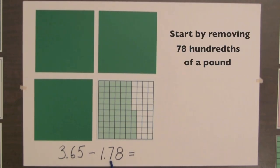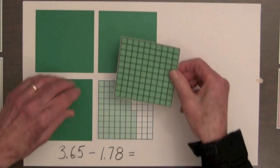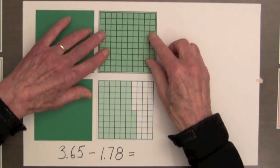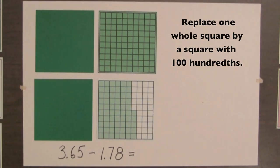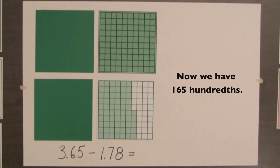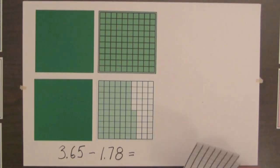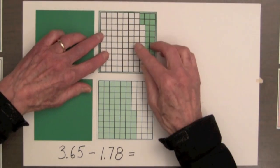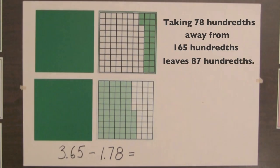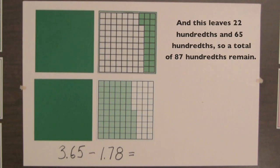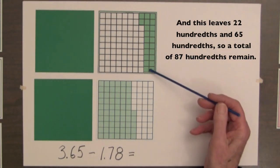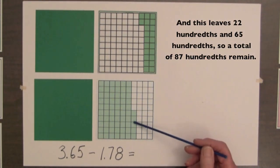We'll start by removing 78 hundredths of a pound, but this square has only 65 hundredths. So we've replaced one whole square by a square with 100 hundredths. Now we have a hundred and 65 hundredths. Then we remove or take away 78 hundredths, which we can show by blocking out 78 hundredths. And this leaves 22 hundredths and 65 hundredths, so a total of 87 hundredths remain.